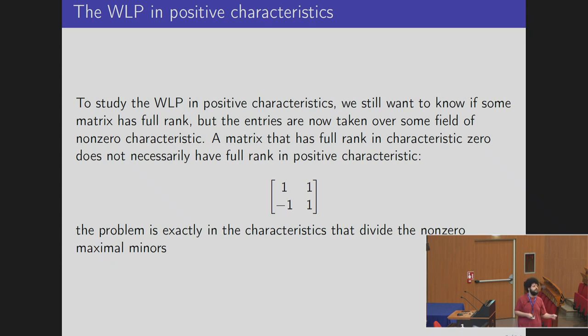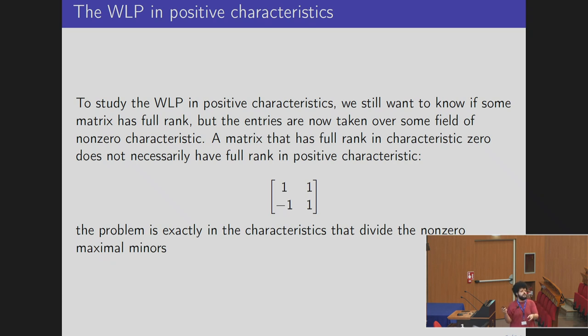The problem is exactly the characteristics that divide the maximal minors, i.e., their GCD. What we want to show is: given an algebra that has WLP in characteristic zero, in which characteristics does the algebra fail the WLP?